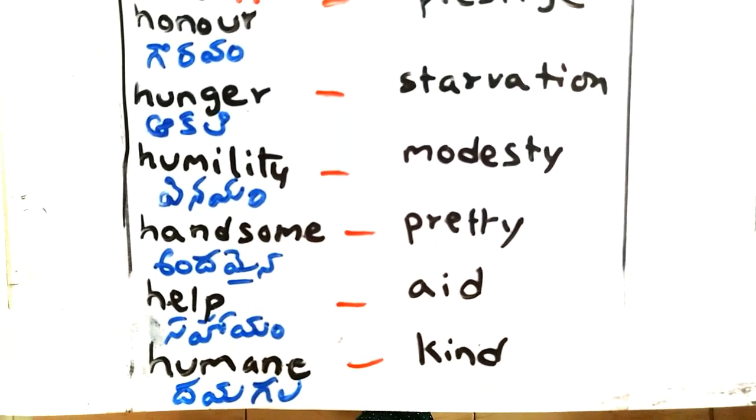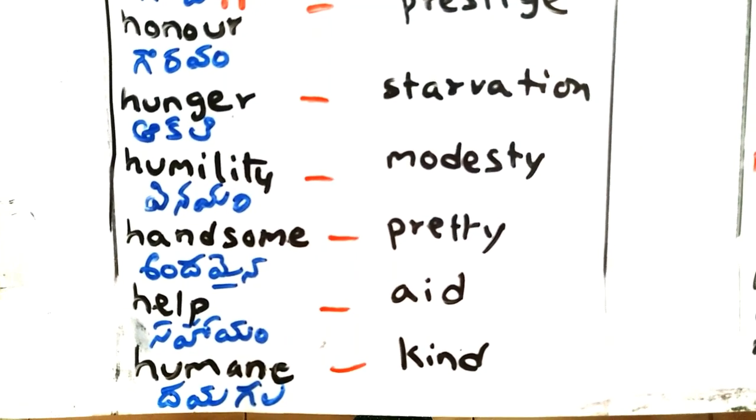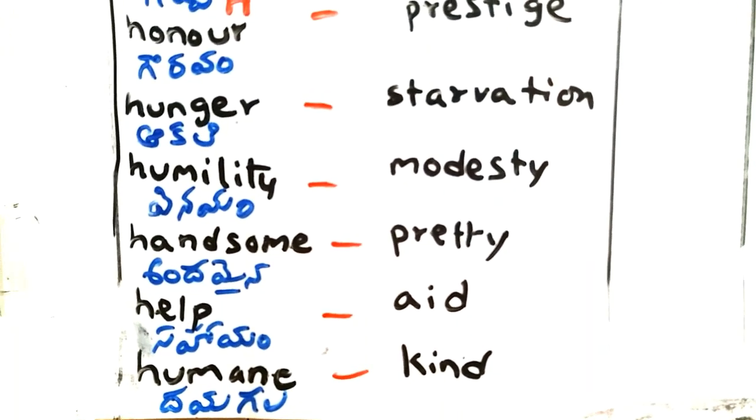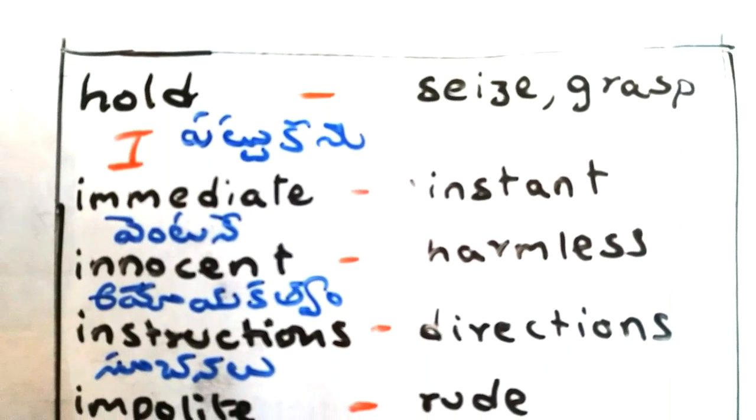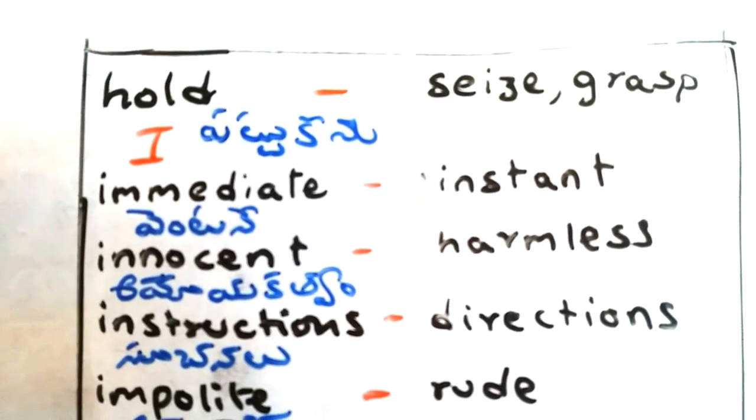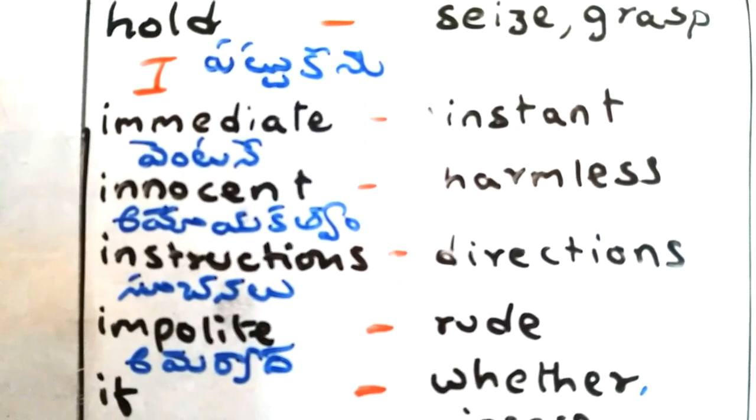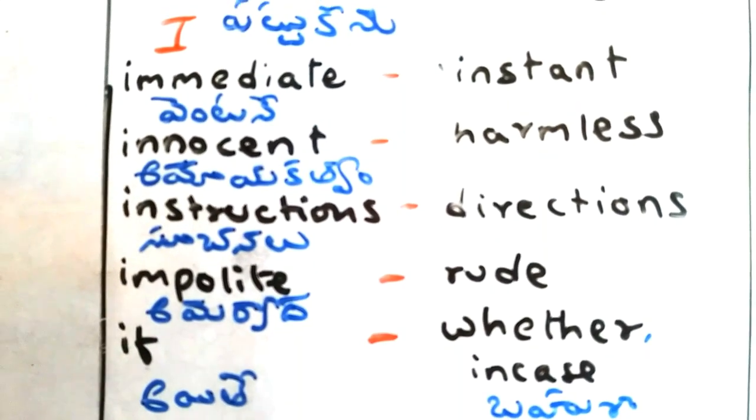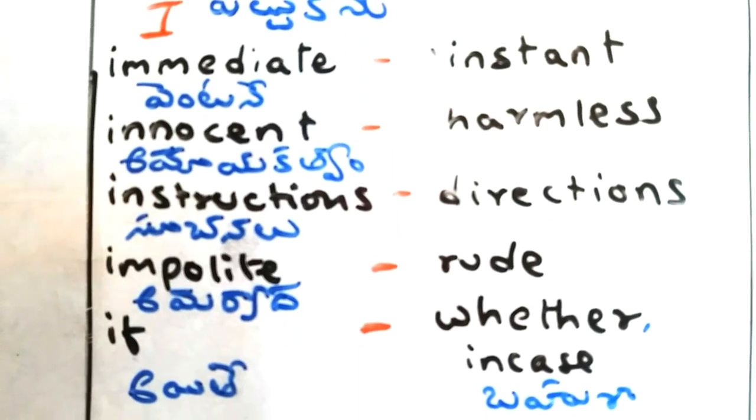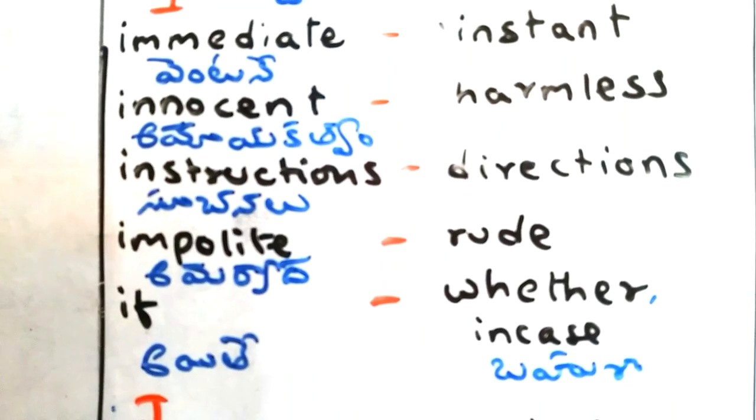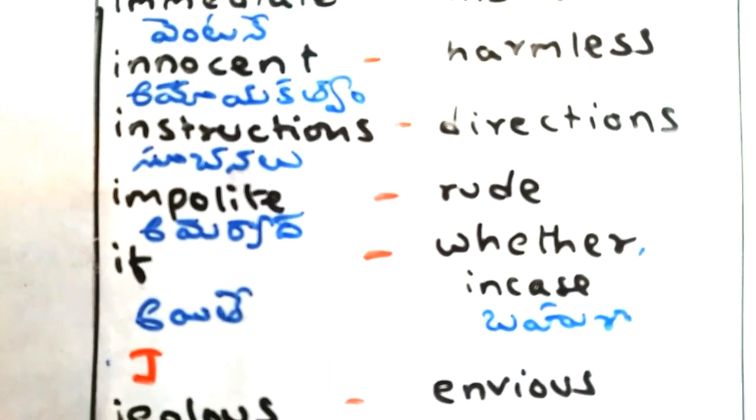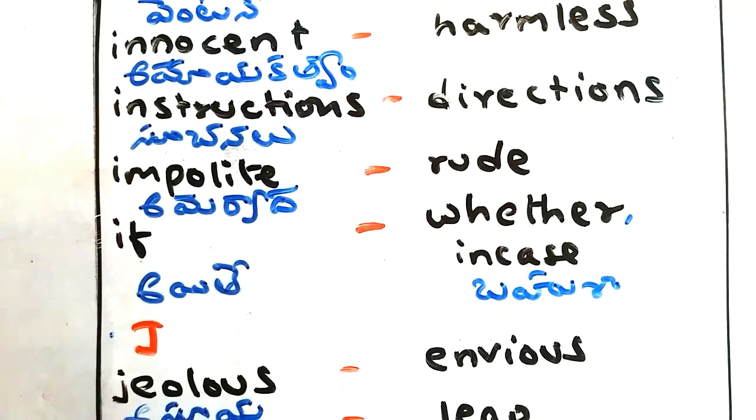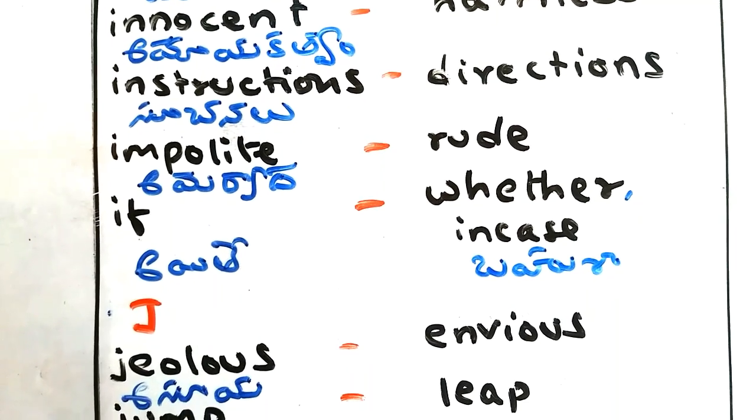Help - sahayam, aid. Human - humility, daigala, kind. Hold - pattukonu, seize, grasp. Immediate - ventana, instant. Innocent - amayakathwam, harmless. Instructions - sujanalu, directions. Impolite - amaryada, rude. If - whether, in case.